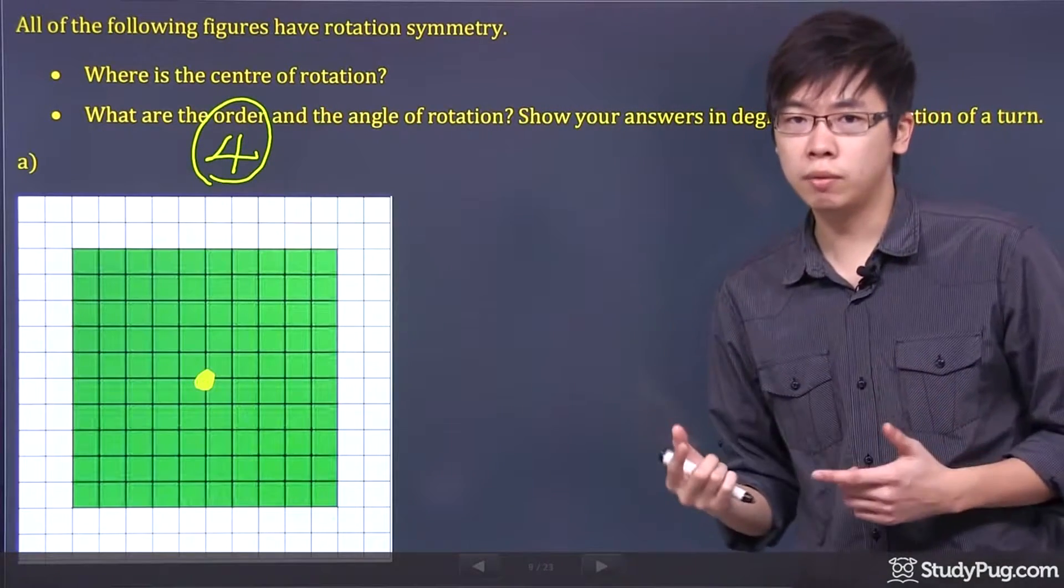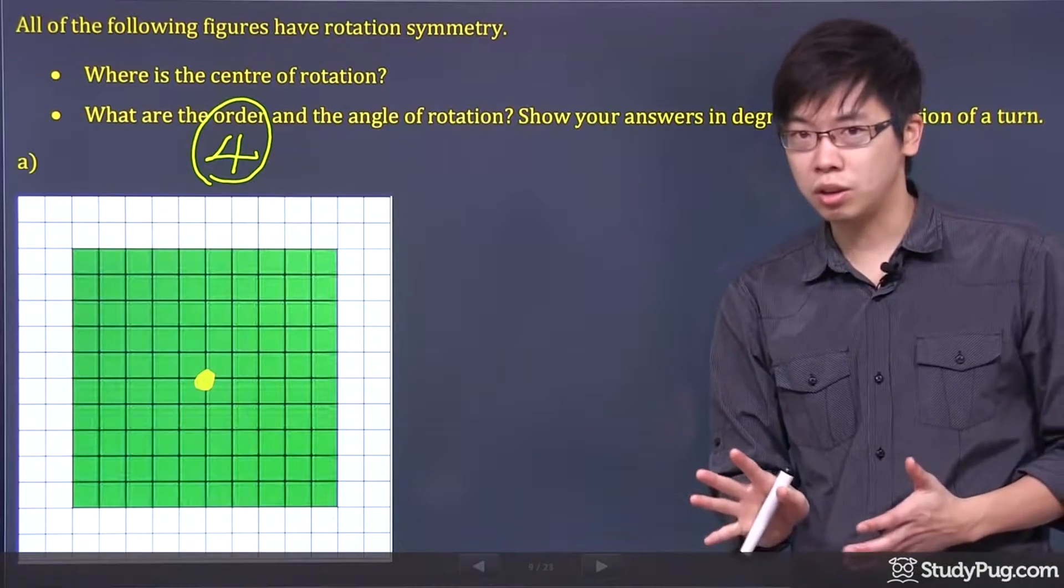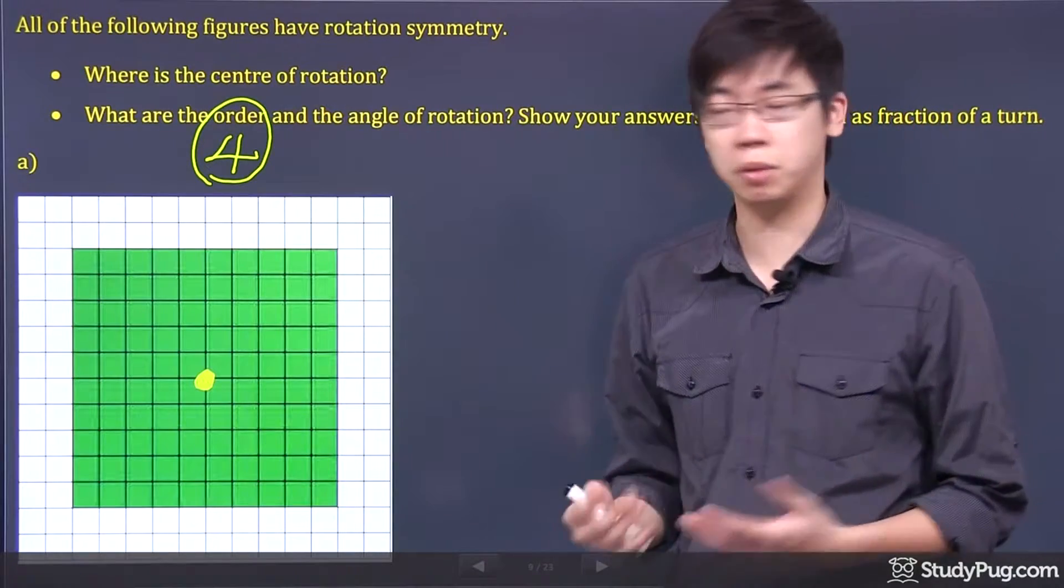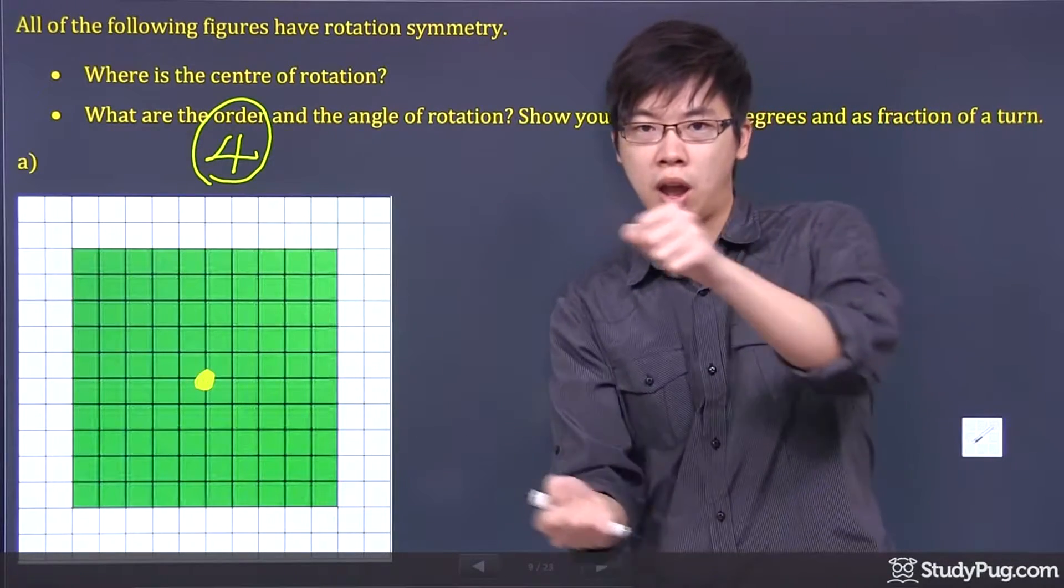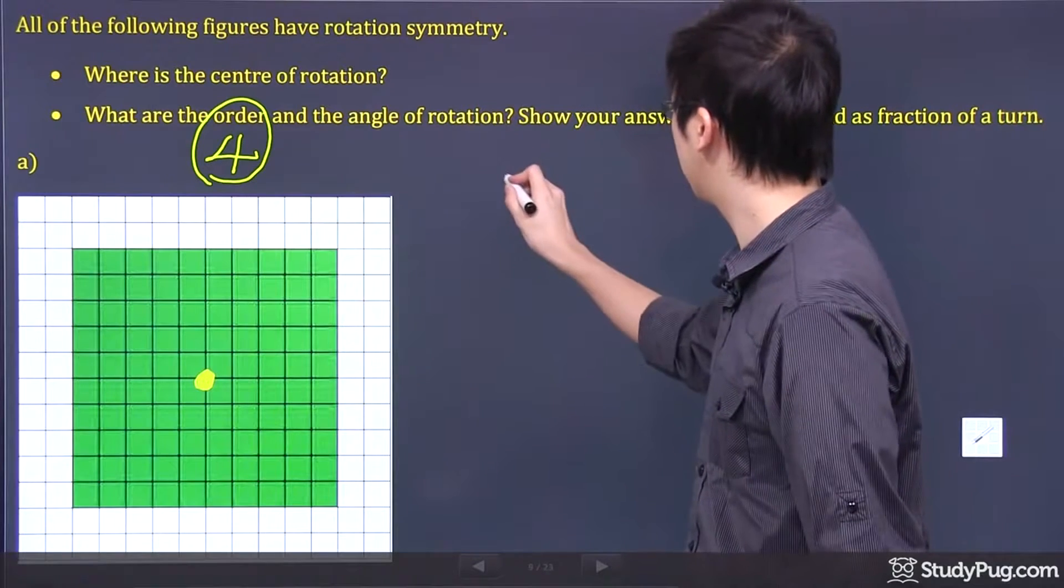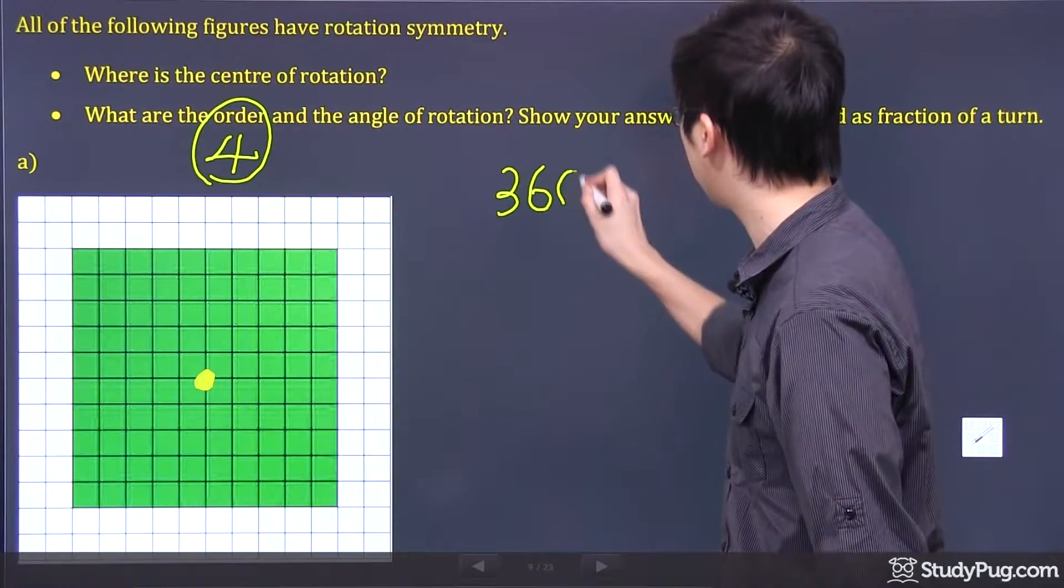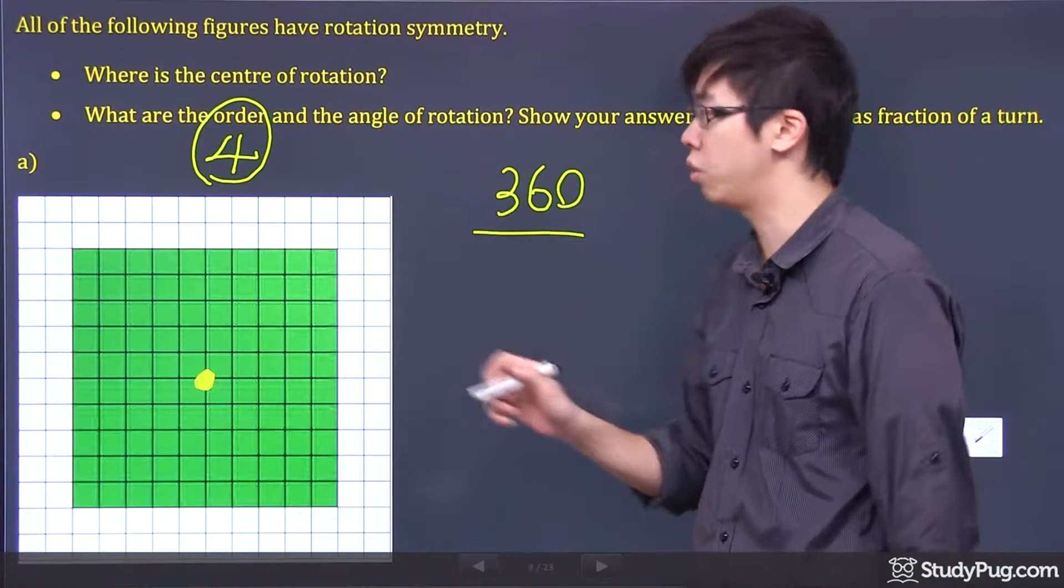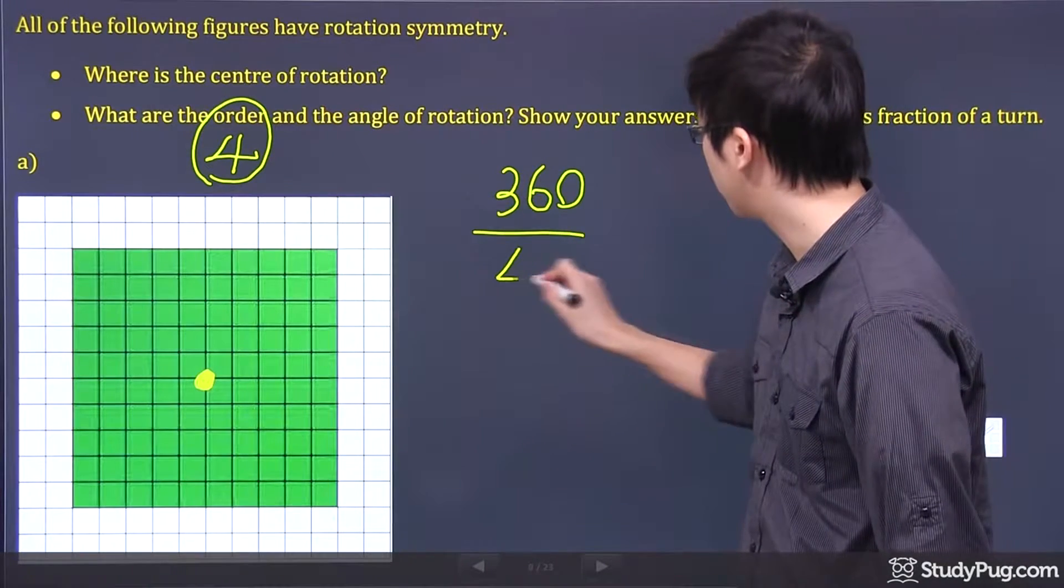Now, the angle of rotation, you can actually calculate it. It's pretty simple. You see, when we rotate things around, it's actually 360. So to calculate this, it's 360, and all you have to do is divide it by the order number that you found, which is four.